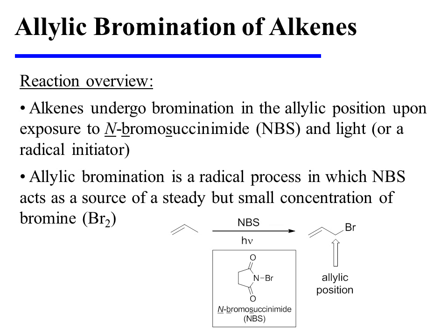Alkenes undergo bromination in the allylic position upon exposure to NBS and light as a radical initiator. Allylic bromination is a radical process in which NBS acts as a source of a steady but small concentration of bromine.